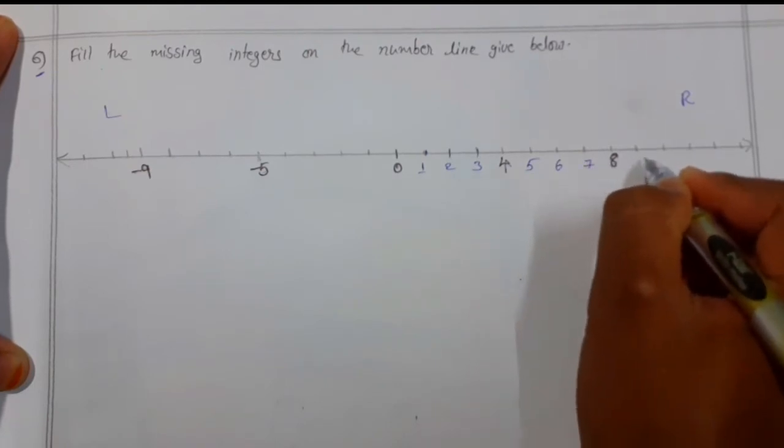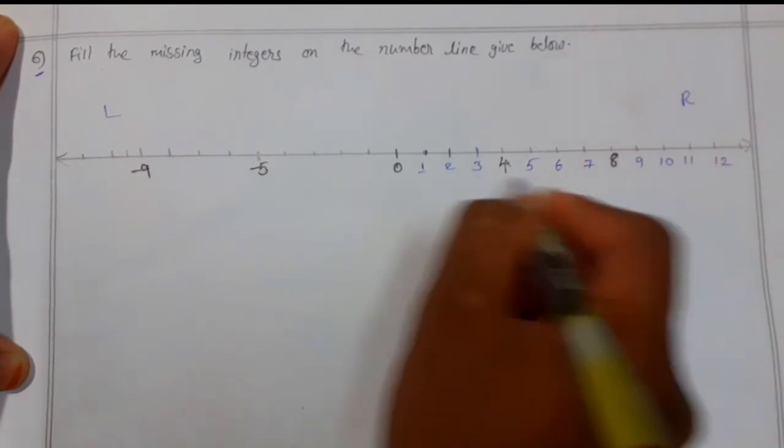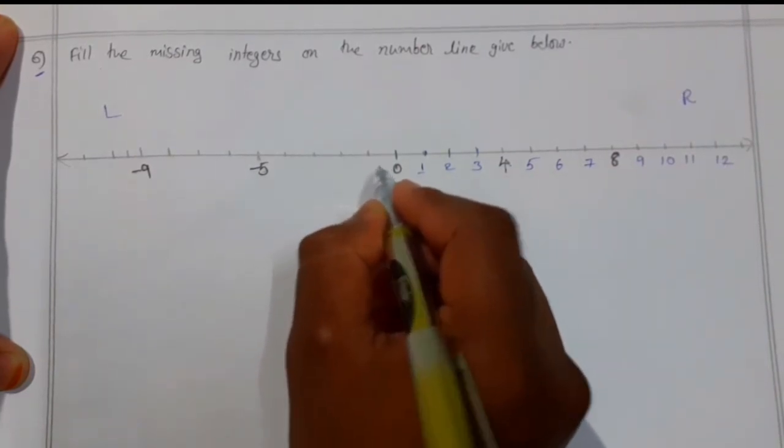After nine, ten, eleven, and twelve. And towards the left side we need to take negative numbers.